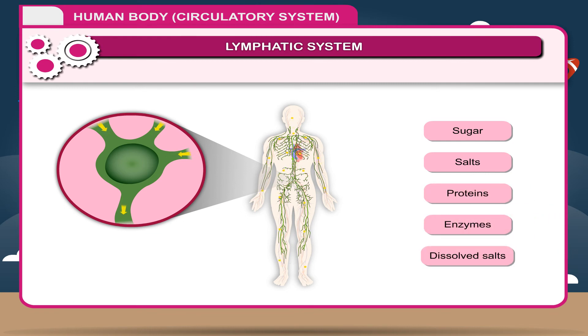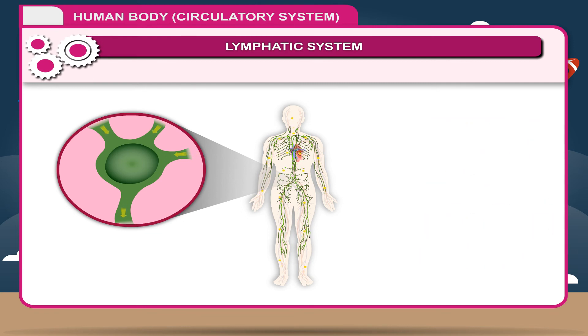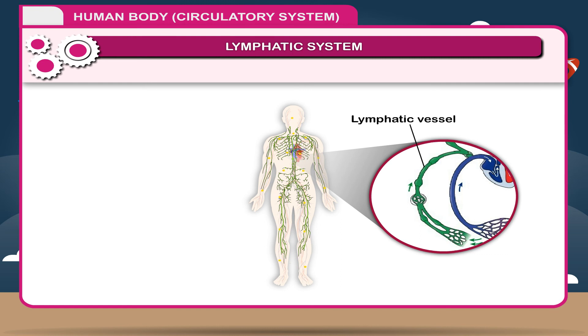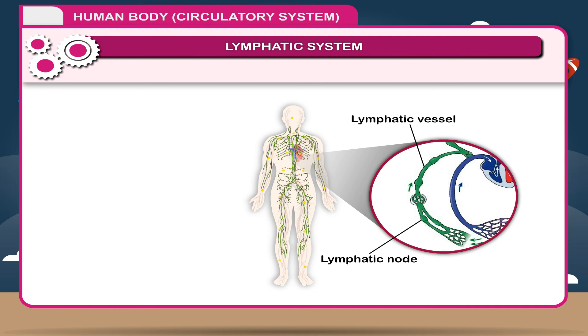Lymph is a yellowish fluid and is composed of sugar. It contains many leukocytes but no platelets. The lymph vessels have swollen points at specific places called lymph nodes.